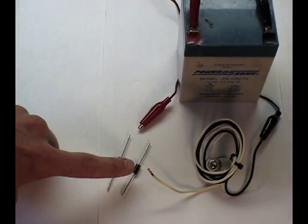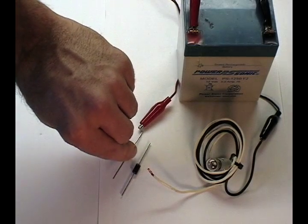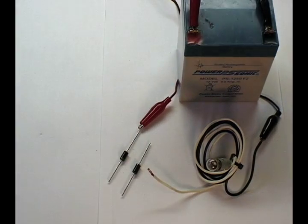A diode is a check valve. Here we have two. We will orient them in opposite directions to observe their effects.